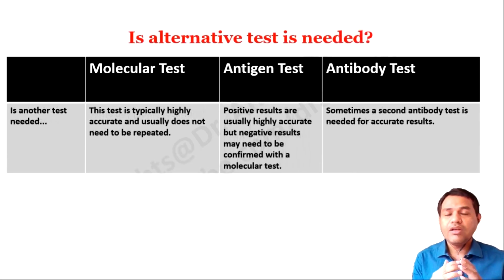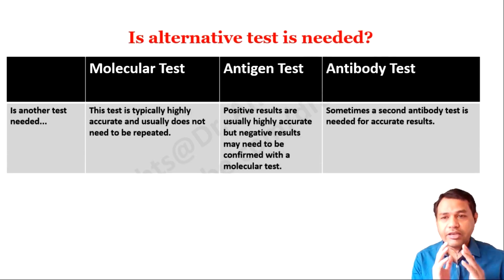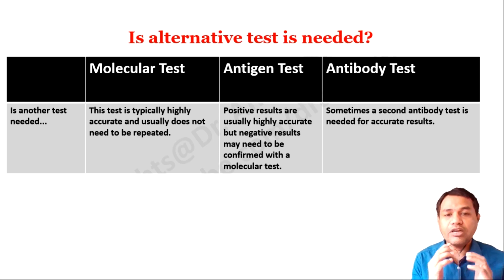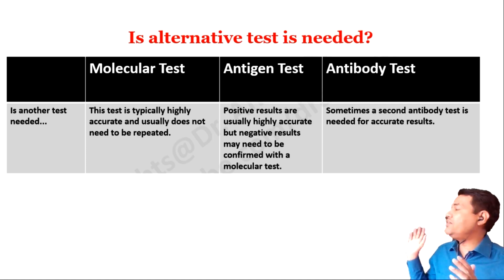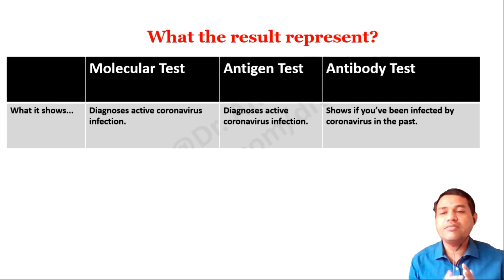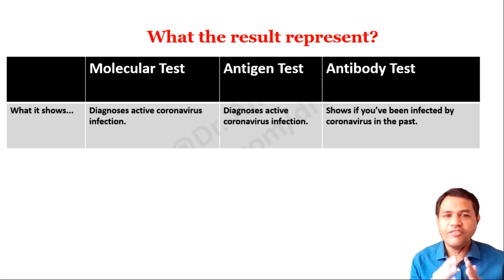The molecular test is highly accurate and usually does not need to be repeated. For the antigen test, positive results are usually highly accurate, but negative results may need to be confirmed with a molecular test. For the antibody test, a second antibody test is sometimes needed for accurate results. The molecular and antigen tests diagnose an active coronavirus infection, whereas the antibody test shows whether you have been infected by the coronavirus in the past.